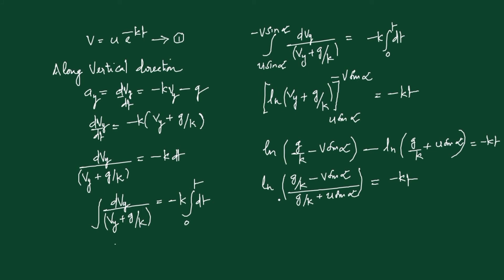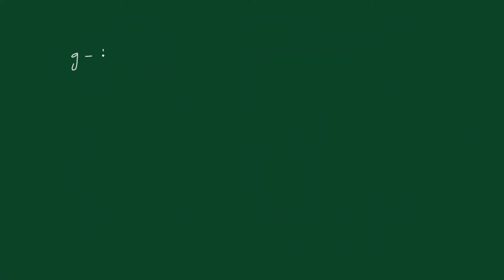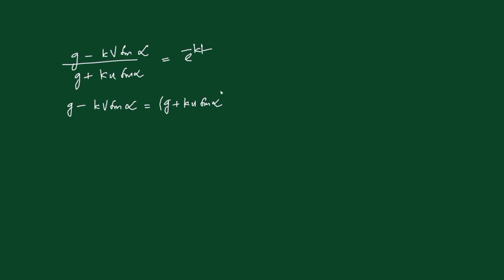Taking k as the LCM on numerator and denominator: ln[(g - kv sin alpha)/k divided by (g + ku sin alpha)/k] = -kt. The k terms cancel, giving ln[(g - kv sin alpha)/(g + ku sin alpha)] = -kt. Rewriting: (g - kv sin alpha)/(g + ku sin alpha) = e^(-kt). Taking (g + ku sin alpha) to the right side: g - kv sin alpha = (g + ku sin alpha) e^(-kt).